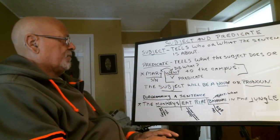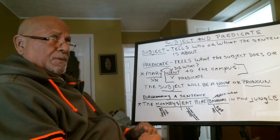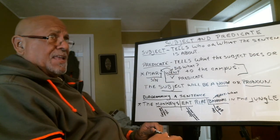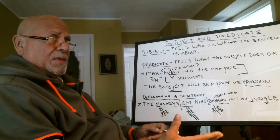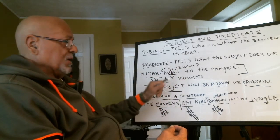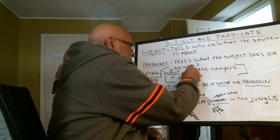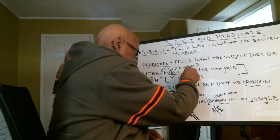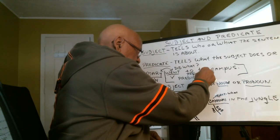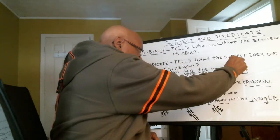So 'Mary went to the campus' — Mary did what? She went. So 'went' is the verb. It's an action verb. How do we know? We ask the question: what did Mary do? She went. 'To' is a preposition, 'the' is an adjective, 'campus' is a noun. The prepositional phrase is 'to the campus.'